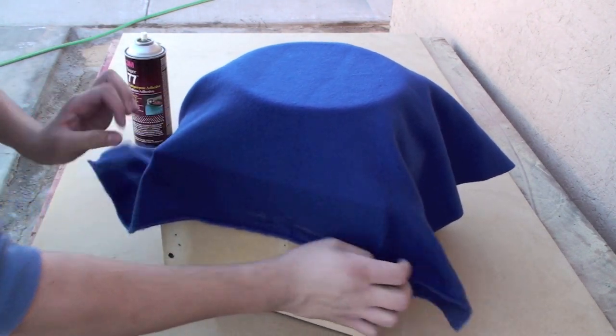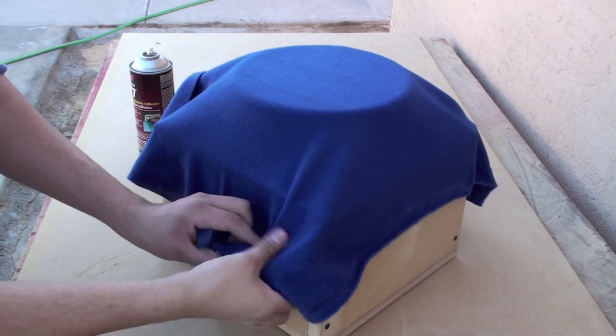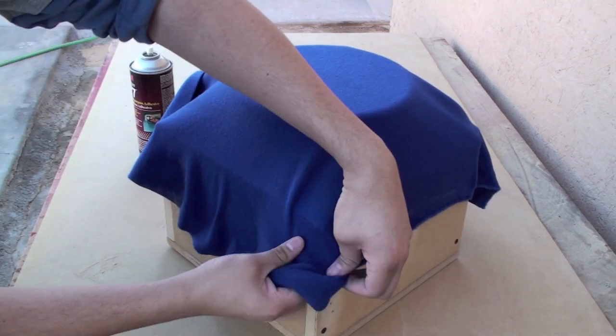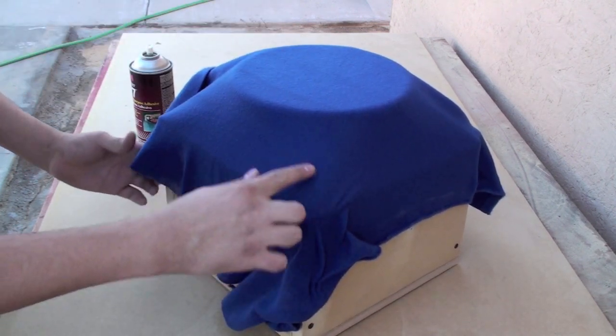Repeat this step for the other side. To eliminate wrinkles and sags, simply stretch the fleece and press it onto the glue. Repeat this process throughout the box.